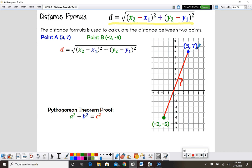Over here I have a coordinate graph that has two points on it. Point A is this blue one, 3, 7, and point B is down here, negative 2, negative 5.